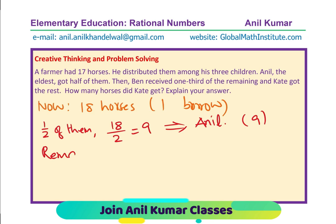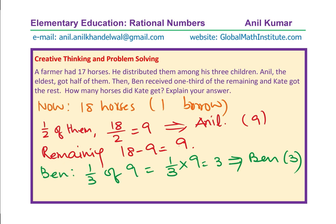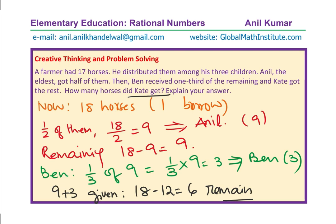Remaining out of 18, after 9 go to Anil, we have 9 left. Ben gets one third of 9, which is one third times 9, equal to 3. So Ben gets 3. Now, 9 plus 3 equals 12 distributed. Out of 18, 18 minus 12 means 6 remain. So Kate gets 6 — or does she?